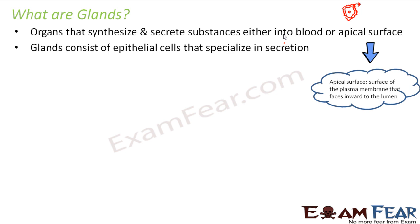We have spoken about epithelial tissue — it is the outermost layering of tissue; our skin consists of epithelial tissues. Epithelial tissues are of many types: cuboidal epithelium, squamous epithelium, columnar epithelium — each with different specialization and purpose. Some are used for protection, some for secretion. Glands are made up of those epithelial cells that specialize in secretion.